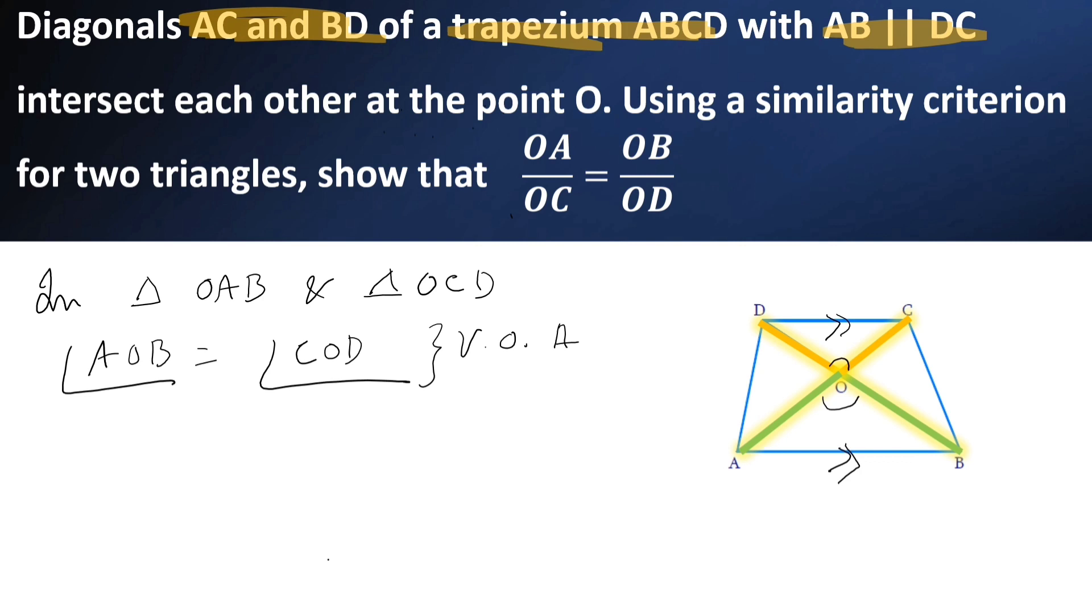And angle OAB is equal to angle OCD. Why? Here you observe that AB parallel to CD and so they are alternate angles.